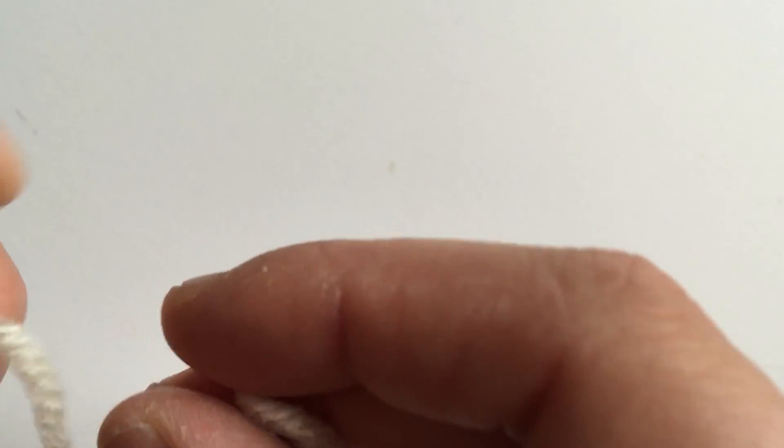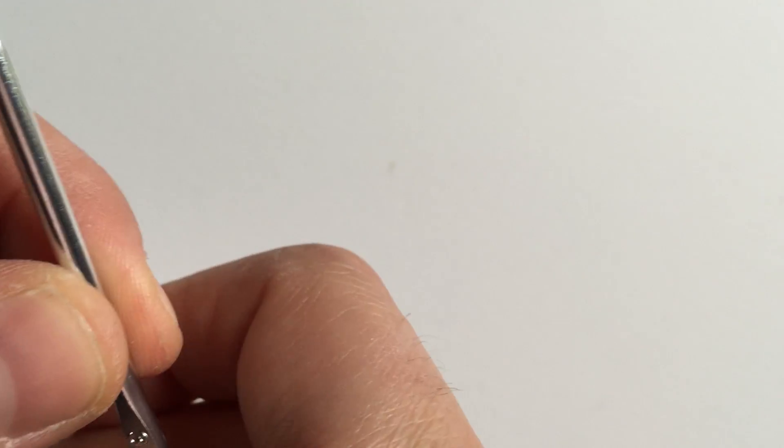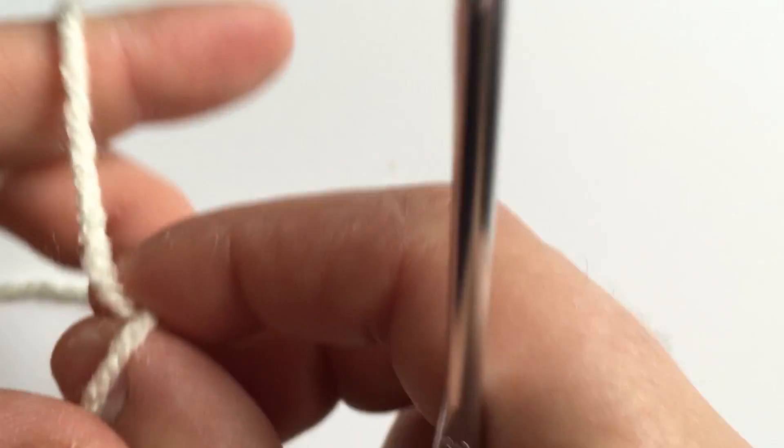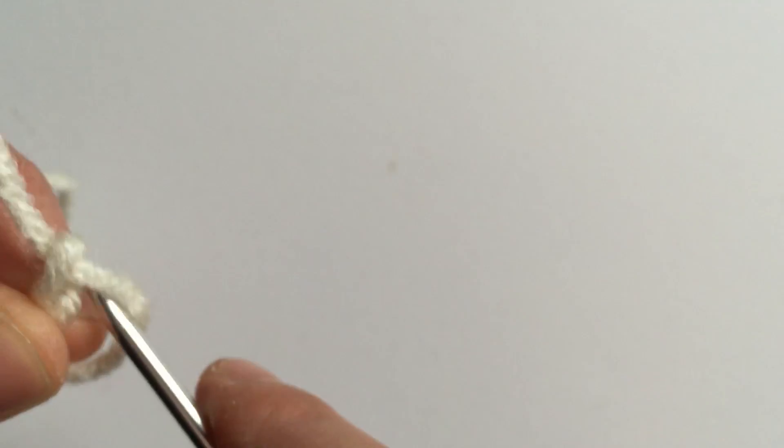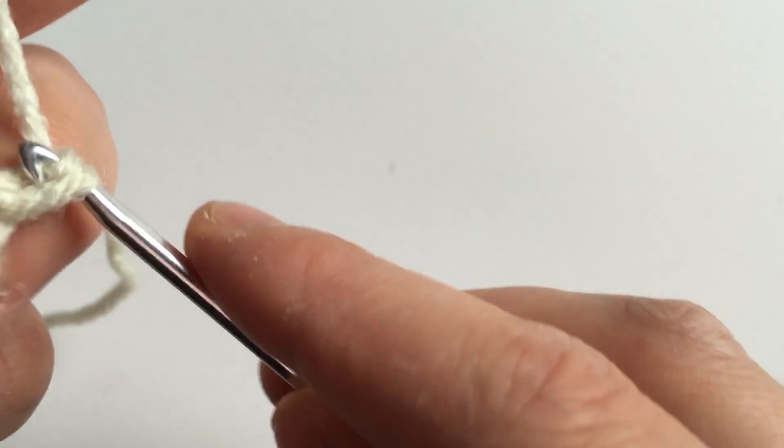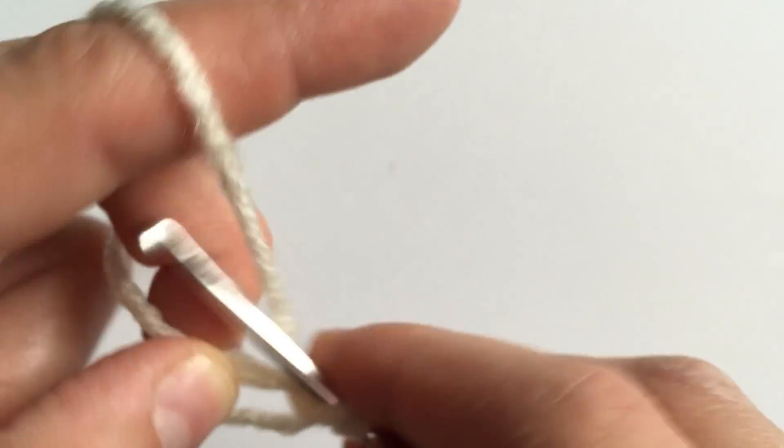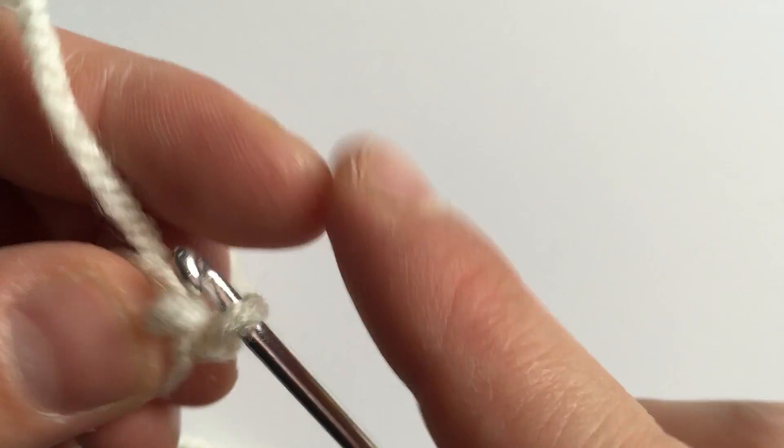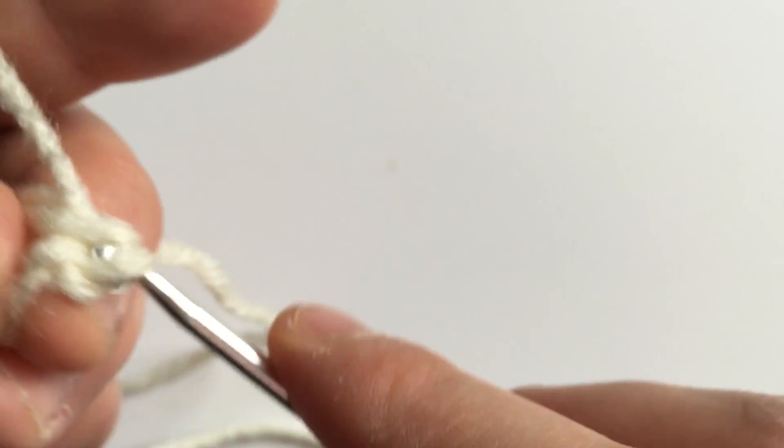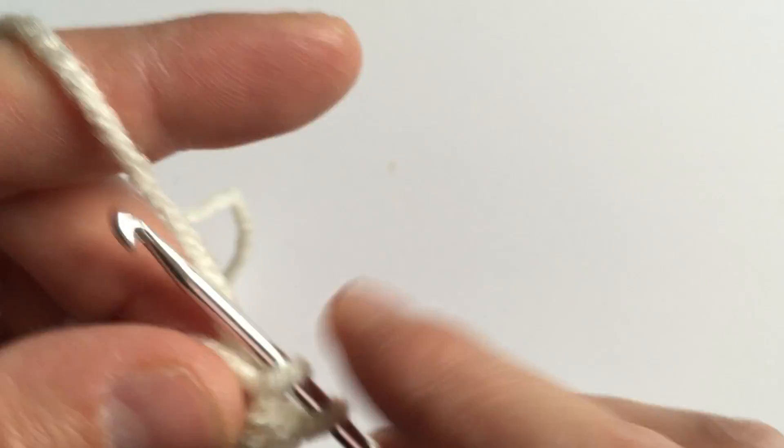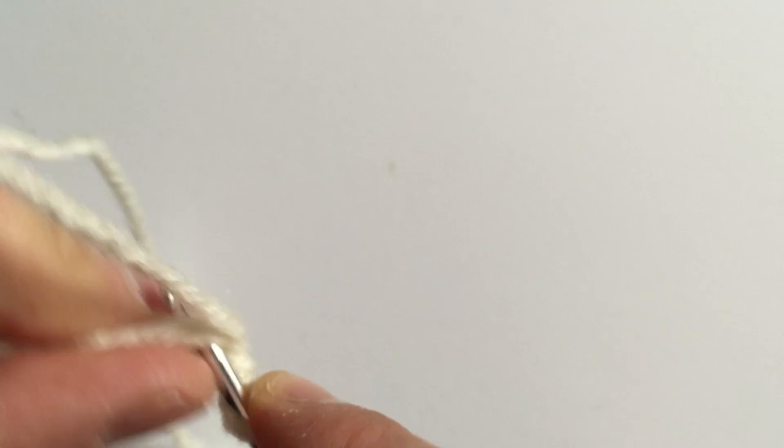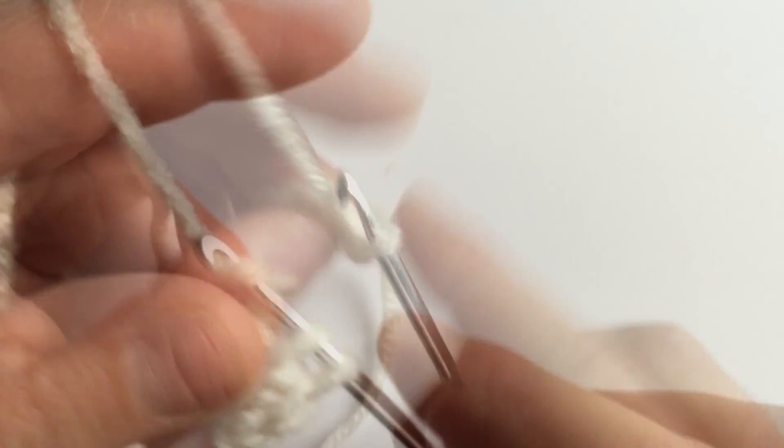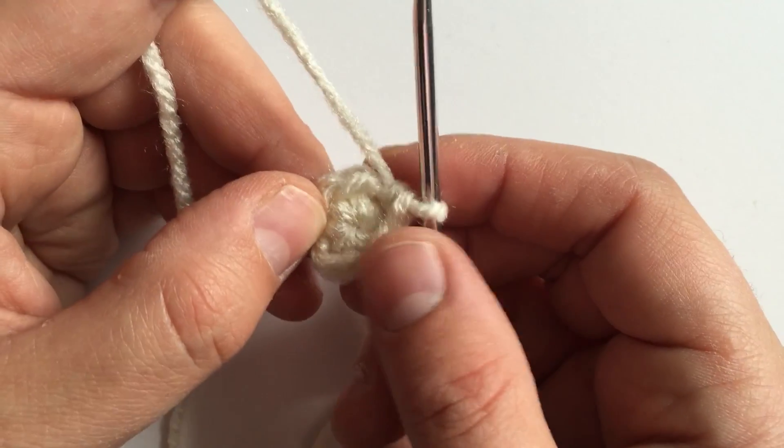The first step is to start with the larger hook. In this case a 3.0, though I'm actually using a three and a half millimeter. You want to do six single crochets in a magic ring. The next step is to increase in each single crochet for a total of 12.